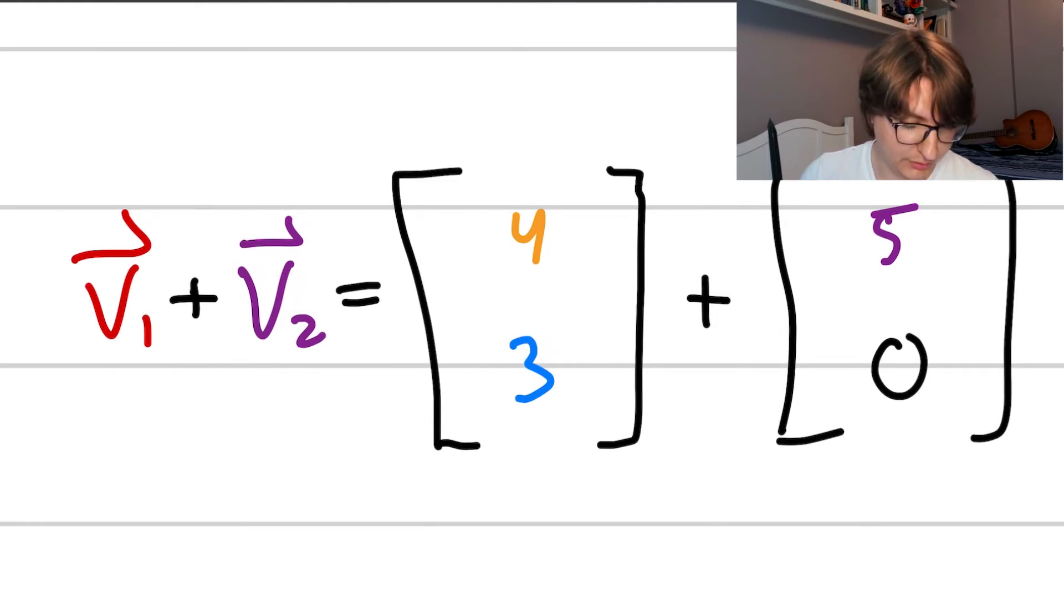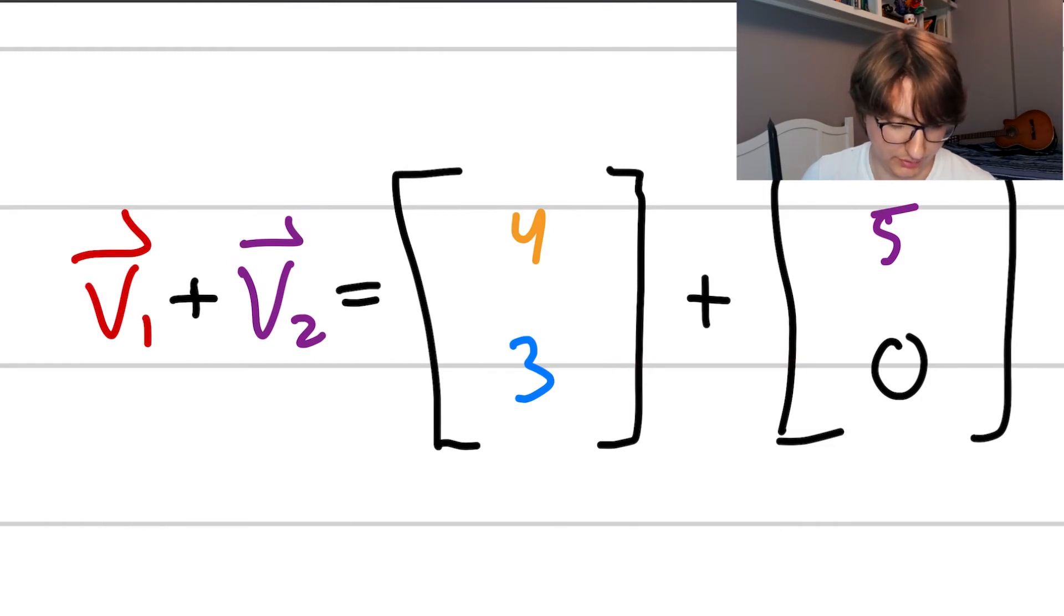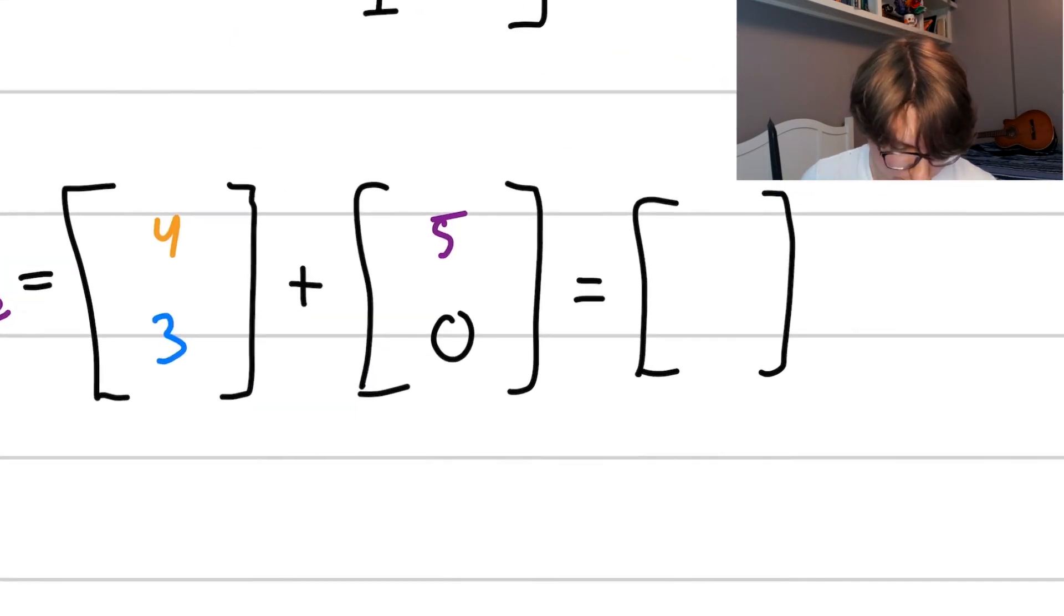But if we have it written out in this matrix form, all we need to do is add the like terms together. So we have to add the 4 to the 5, and the 3 to the 0, to get our resultant vector. So adding 4 to 5, we get 9, and adding 3 to 0, we also get 3. So our final vector has an x component of 9, and a y component of 3.